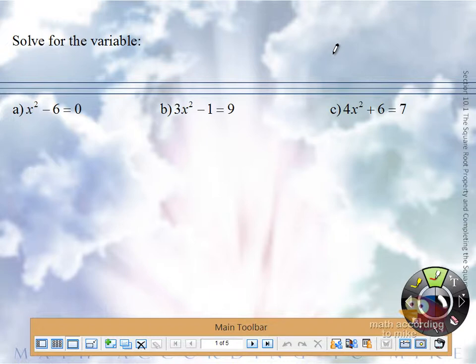Alright, this is a great candidate for the square root property, not because we just talked about it, but because we can rewrite the equation to be a perfect square equals a number. So what can I do to both sides to get it in the form of something squared equals number?